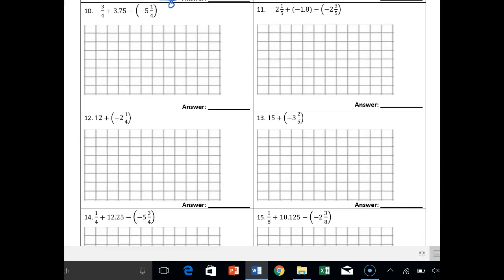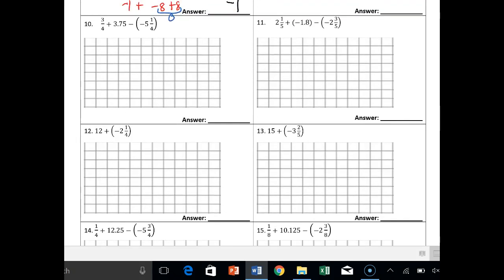Okay there's no KCC on number 9. Number 10, we want to keep change change, so plus positive. And then let's use the commutative property of addition, so 3 fourths plus I'm going to split this up and say 1 fourth plus 5 plus 3.75. And if you want to change that to fourths you can, but we might not have to.